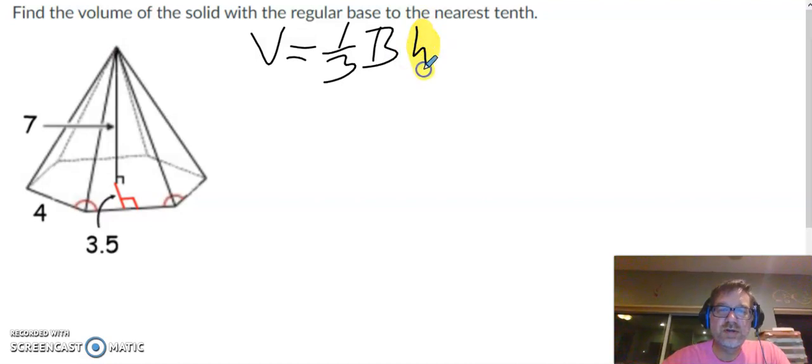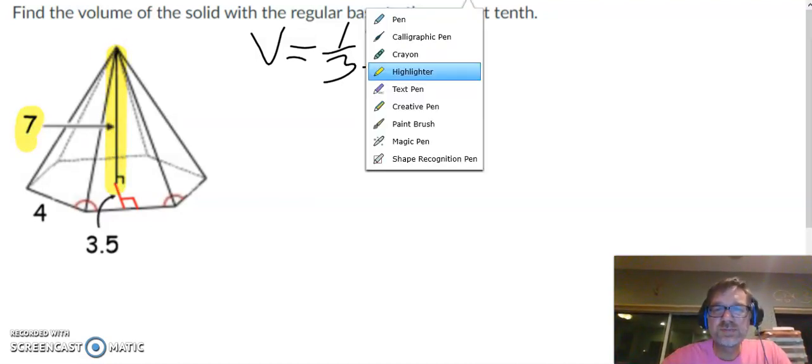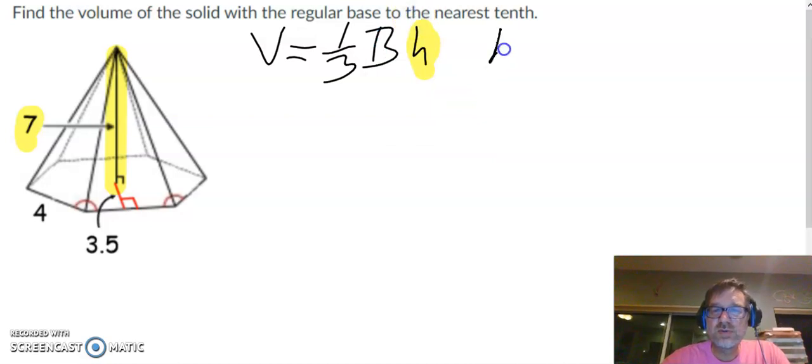So the height of the pyramid is that distance right there. I did height first just because it's easiest. So we know the height of this pyramid is 7.